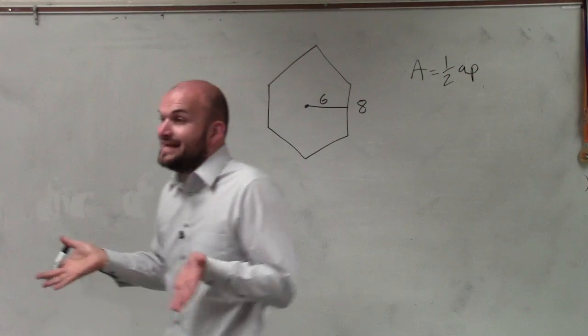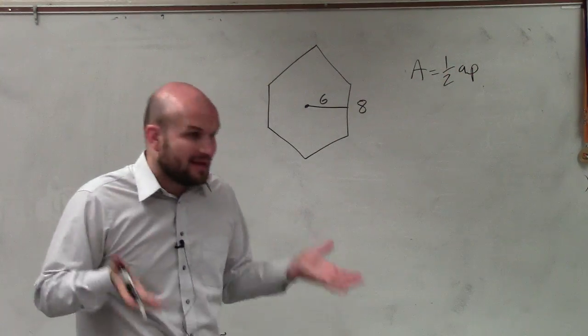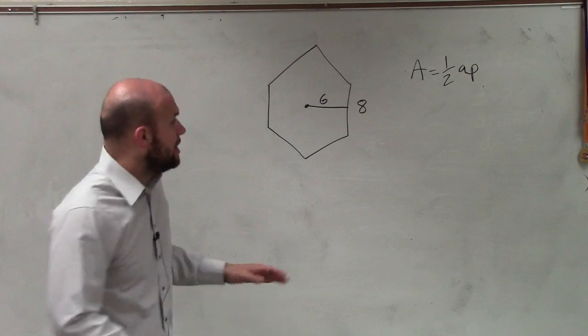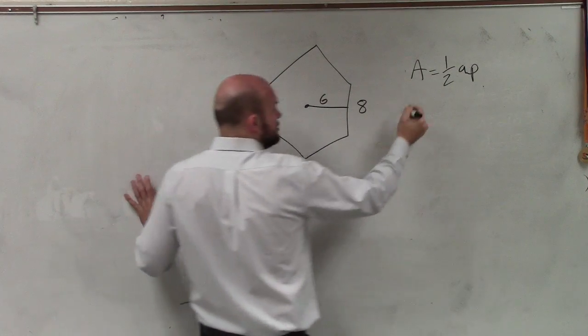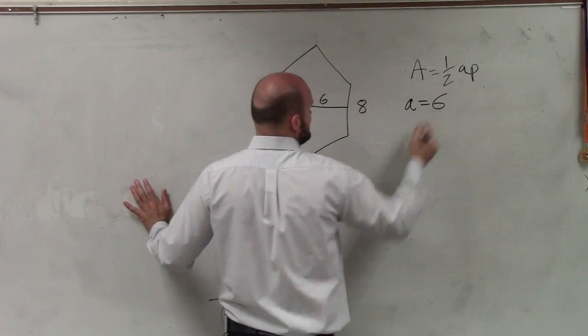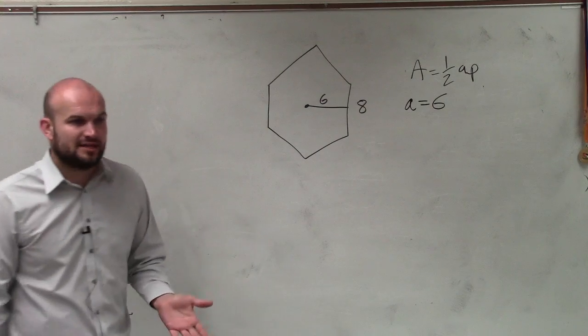Where we have to be able to find a is what we call the apothem, and p is the perimeter. So remember, the apothem is the distance from the side to the center. So we can say a equals 6. Now we need to find the perimeter.